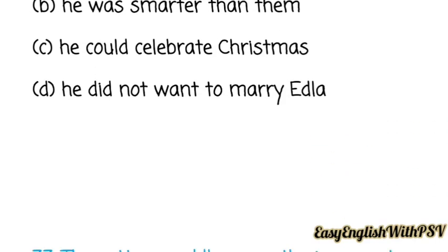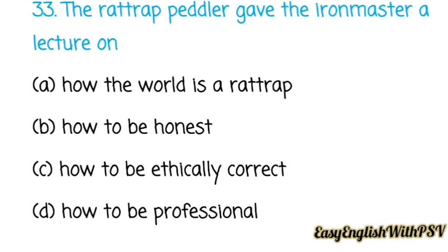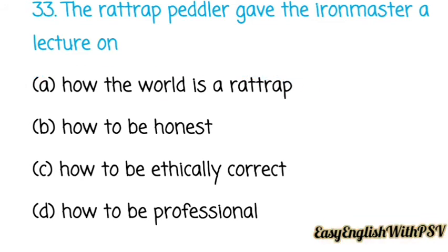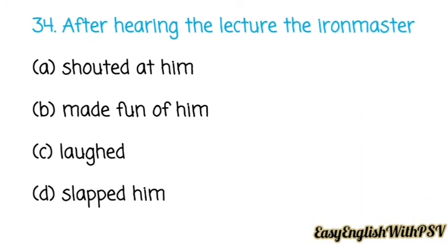Question number thirty-three: The rat trap peddler gave the iron master a lecture on — how the world is a rat trap, how to be honest, how to be ethically correct, or how to be professional? The correct answer is: how the world is a rat trap. Question number thirty-four: After hearing the lecture, the iron master — shouted, made fun of him, laughed, or slapped him? He laughed heartily.